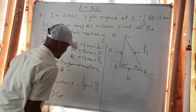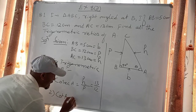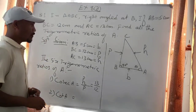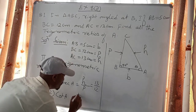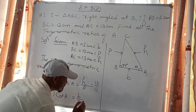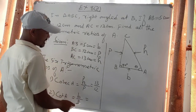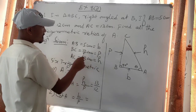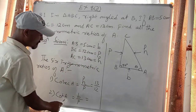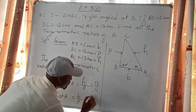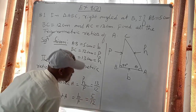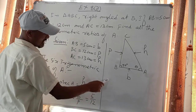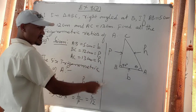For cot of A, the formula is base over perpendicular. The base is 5 cm and the perpendicular is 12, so the ratio of cot A equals 5 by 12.